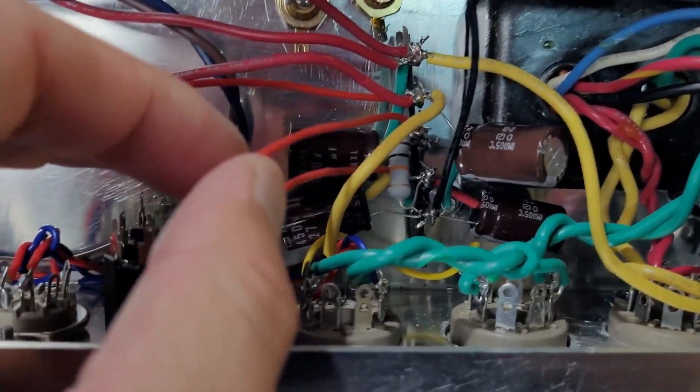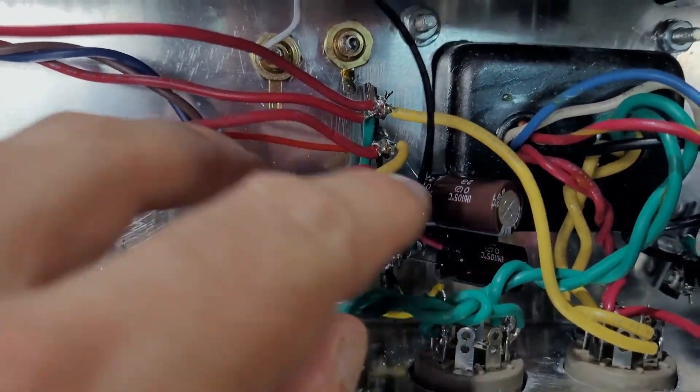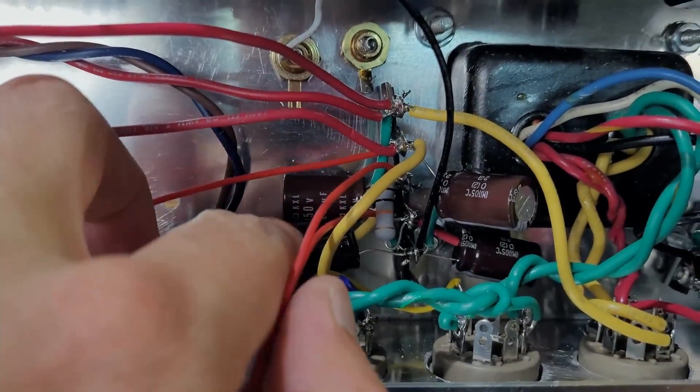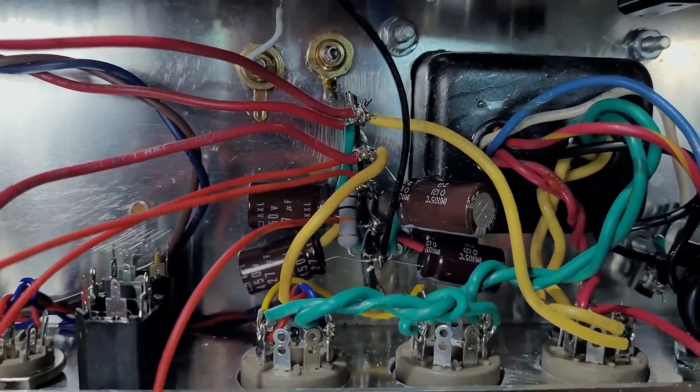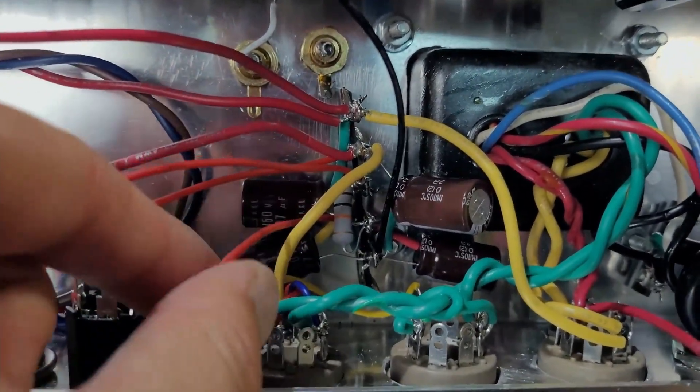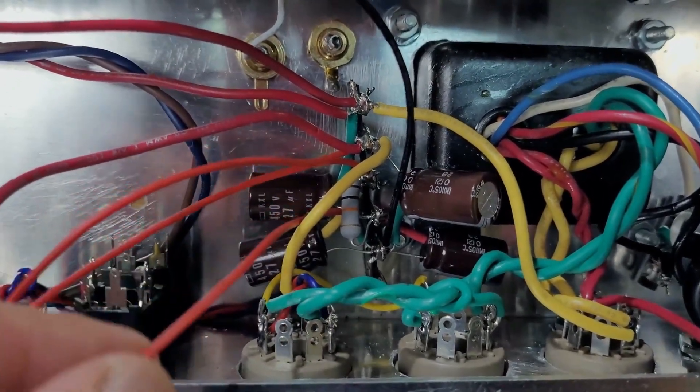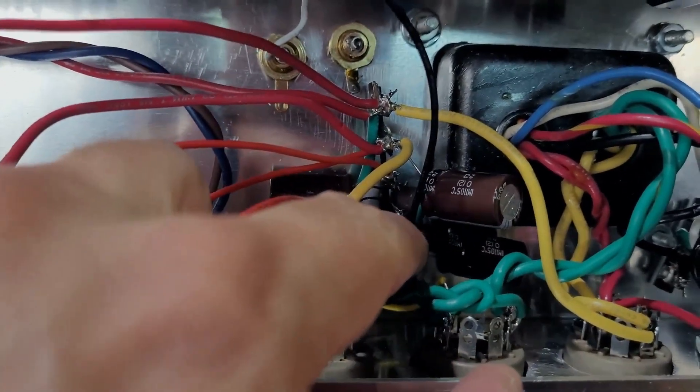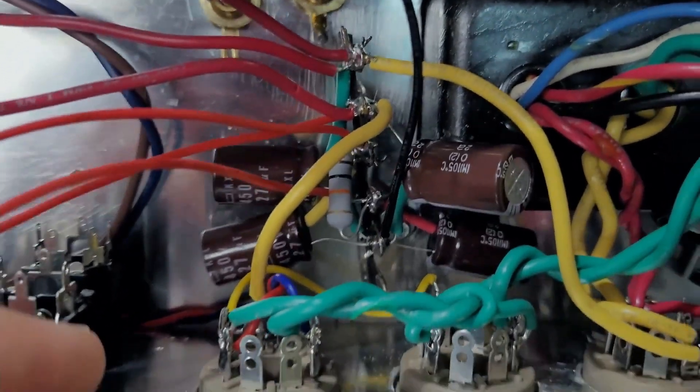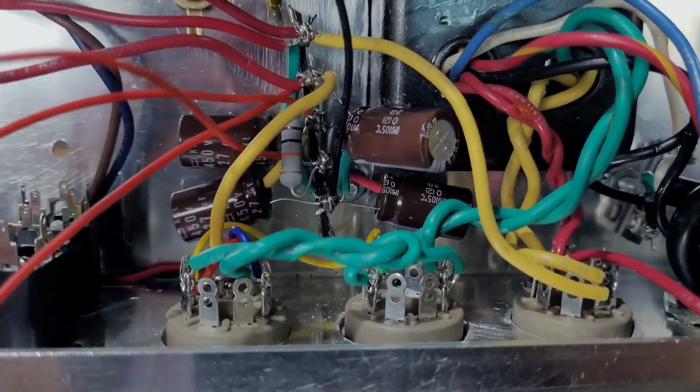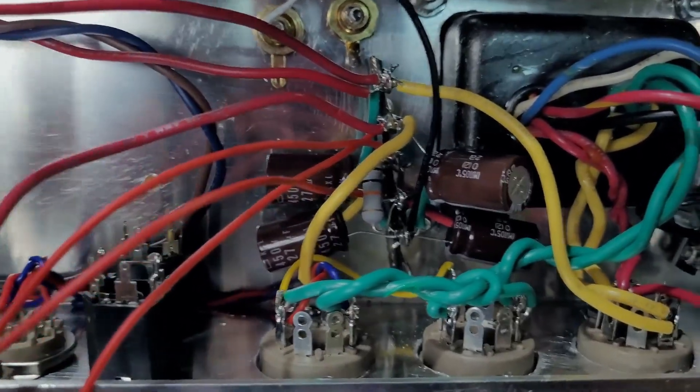Then we've got B plus node three right here. Let's see. That filter cap is down here. Filter cap number two is here. Number three is down here. This red wire is sending out to the component board as well. Then we go here to B plus node number four. Right there, you can see we've just got this dropping resistor right there on the board. And then we've got this final red wire, which supplies the B plus to all the preamp tubes.